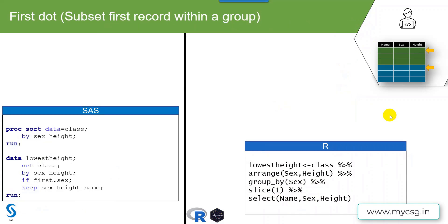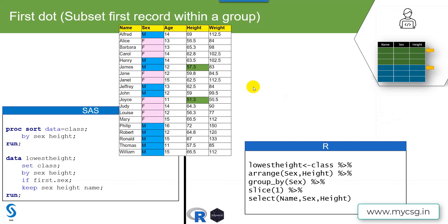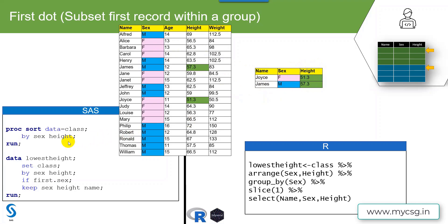Now we will see a second example where we may need the first.dot concept. Here, within males and females, I want to subset the record with the lowest height — so the female student with the lowest height and the male student with the lowest height. This means we want the first record within males and females when we sort by sex and height in ascending order.